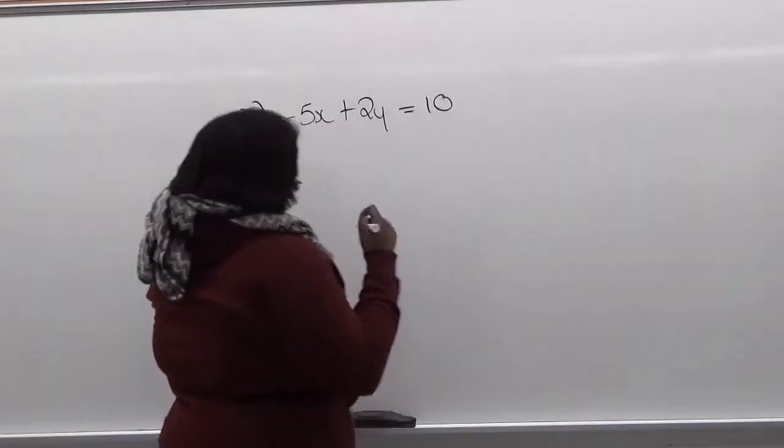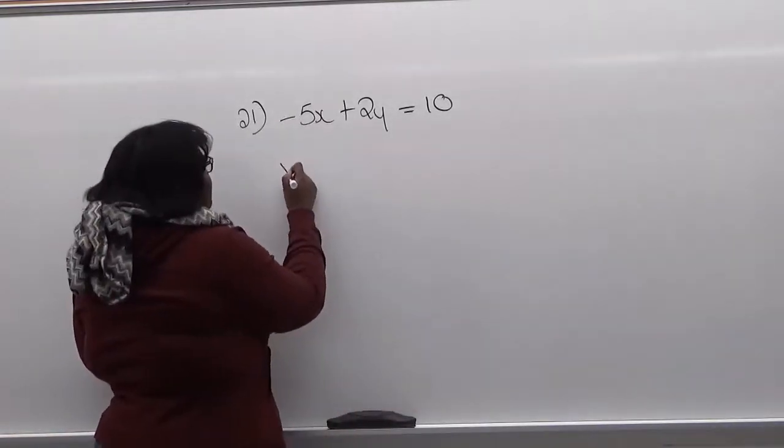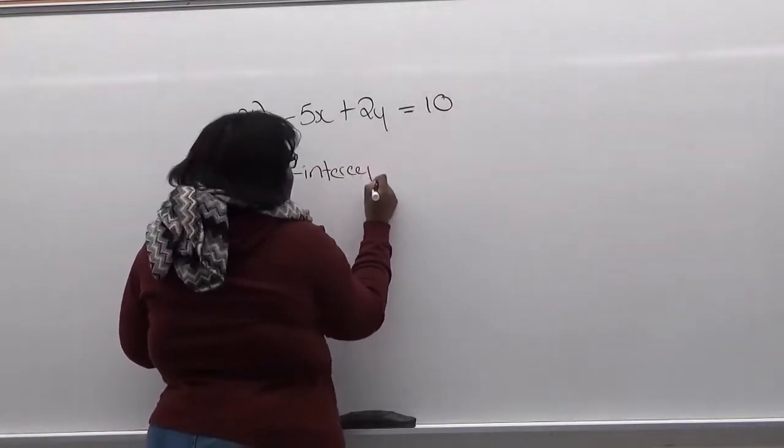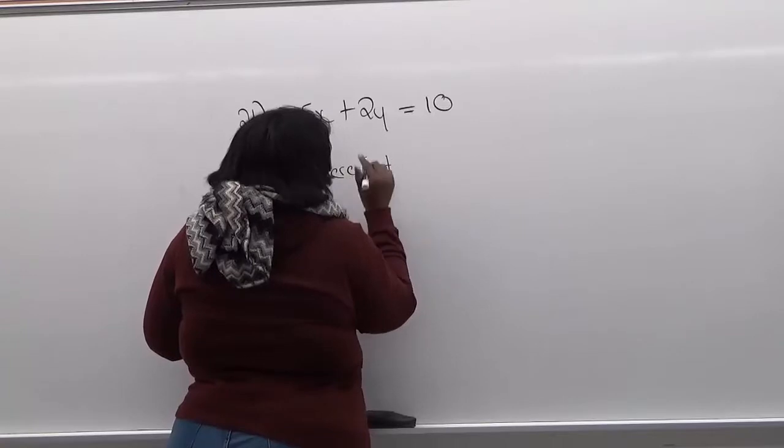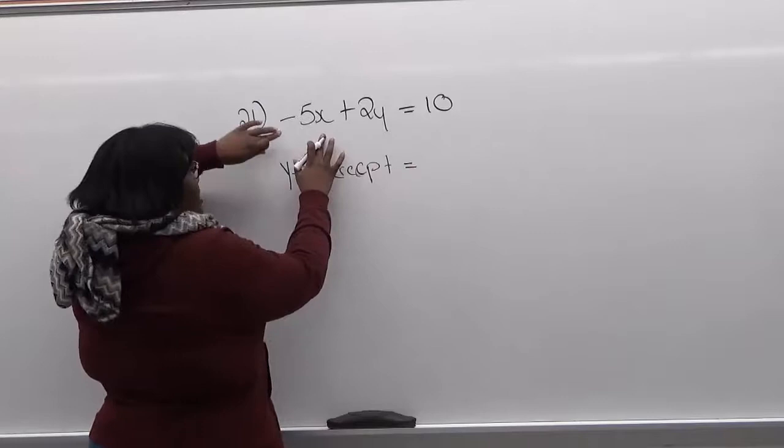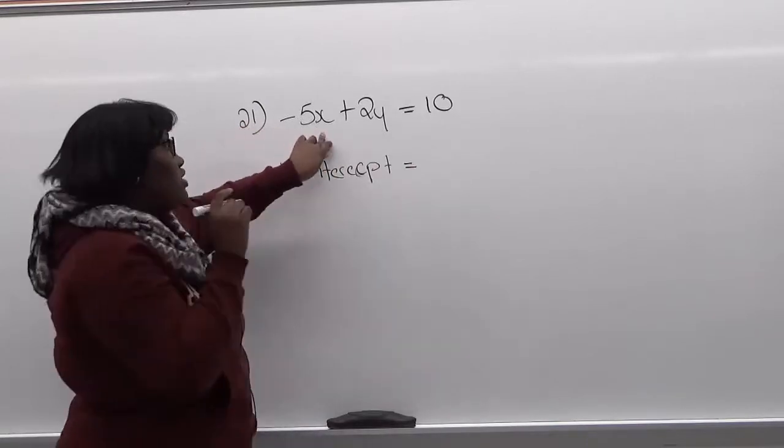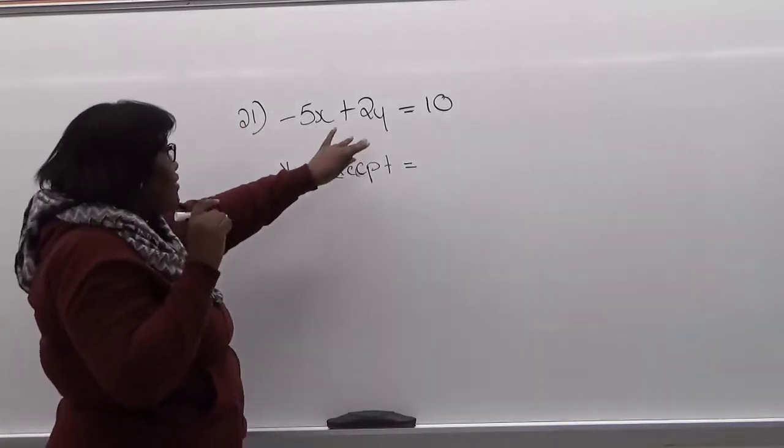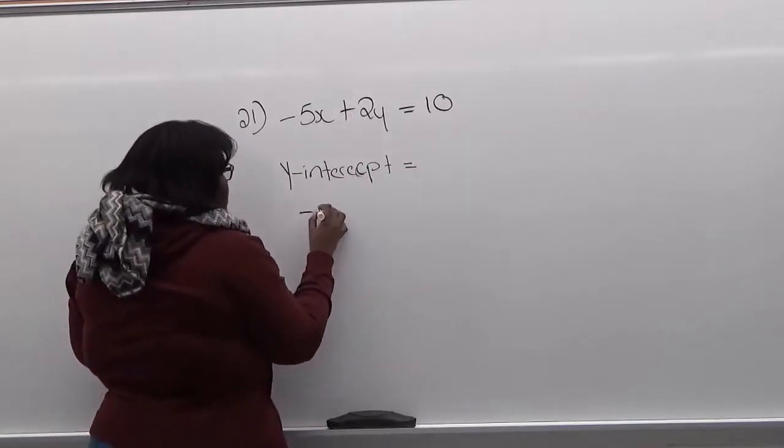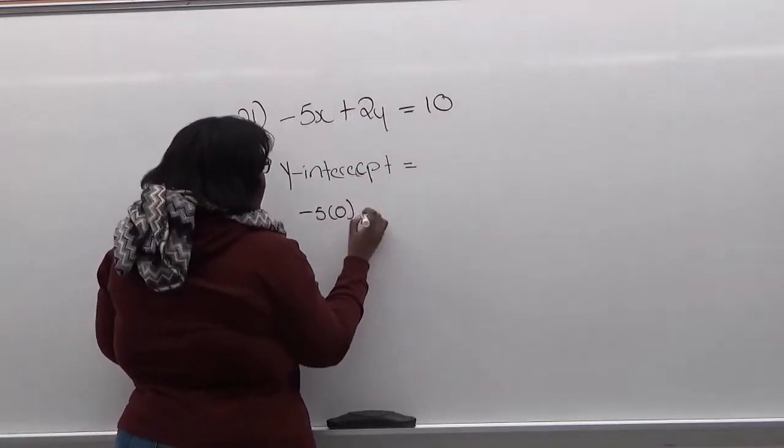So to find the y-intercept, we need to equal x to 0. So we're going to take this equation and we're going to plug in 0 for x. Then after that, we're going to find y. So first, plug in 0 for x.